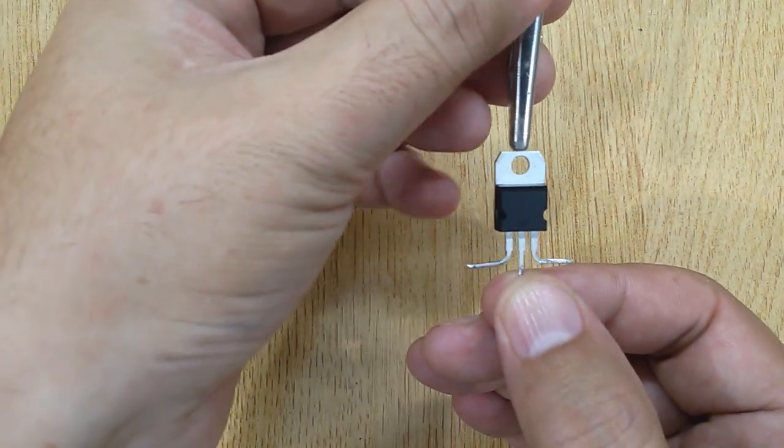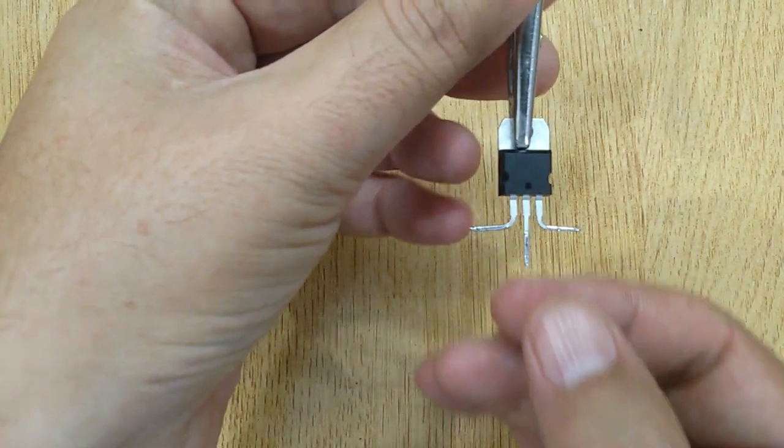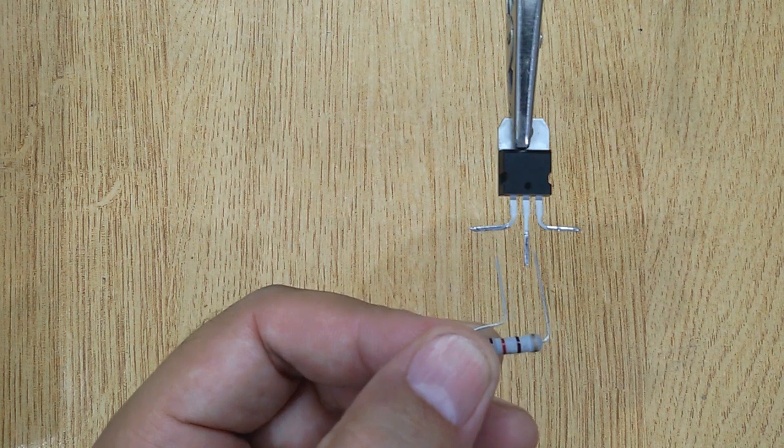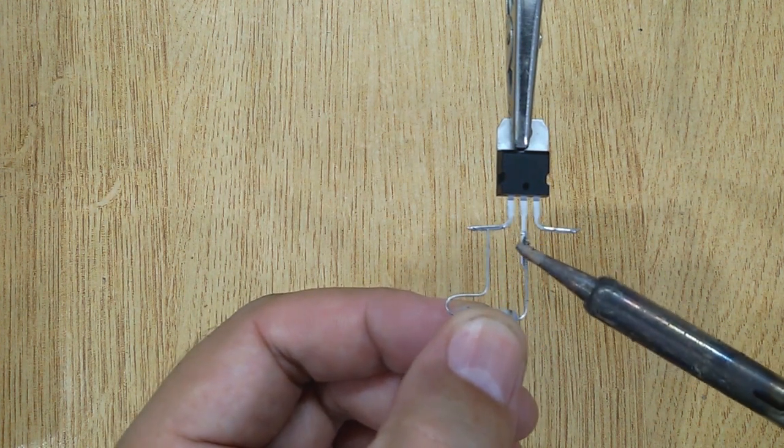Now let's make the circuit. Solder 270 ohms resistor between 1 and 2 pins of transistor LM317.